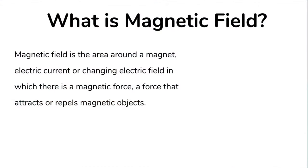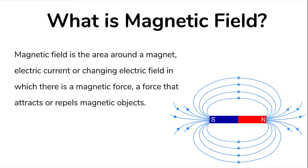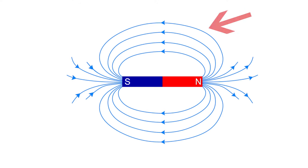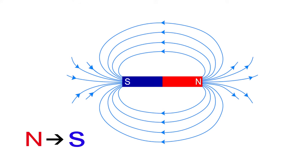Let's begin by understanding what the magnetic field is. The magnetic field is the area around a magnet in which there is a magnetic force — a force that attracts or repels magnetic objects. Crowded magnetic lines indicate a strong magnetic force in that area, while spread out magnetic lines indicate a weak magnetic force. The direction of the magnetic field is always from north to south.